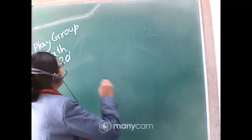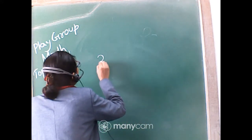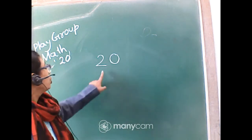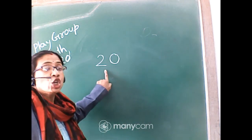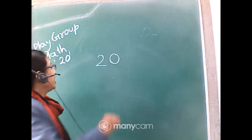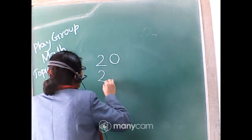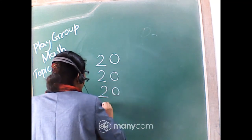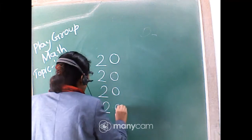How do you write 20? 2, 0. It is a 2 digit number: 20. 2, 0, 20. Let me write it again: 2, 0, 20. One more time: 2, 0, 20.